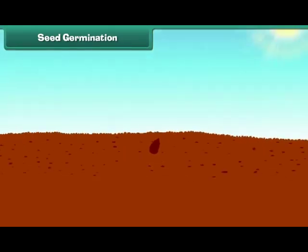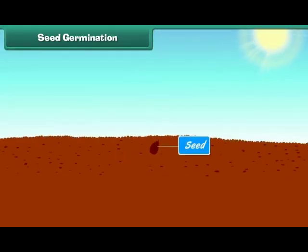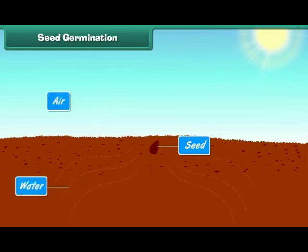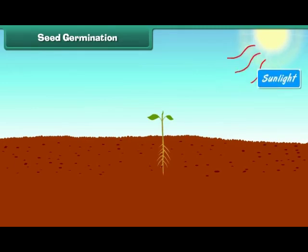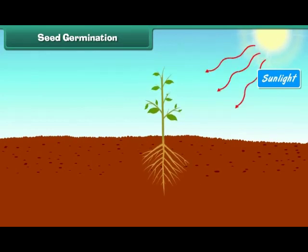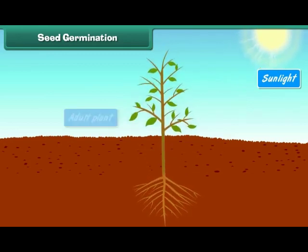Seed germination: seeds start germinating in favourable conditions. Water, air and warmth are required for a seed to germinate. When a seed absorbs water, it swells up and the seed coat becomes soft. The roots of the germinating plant appear first and grow towards the earth. After that, the shoot germinates upwards towards sunlight, and then leaves start growing on the shoot. The young plant is called a seedling, which grows into an adult plant.